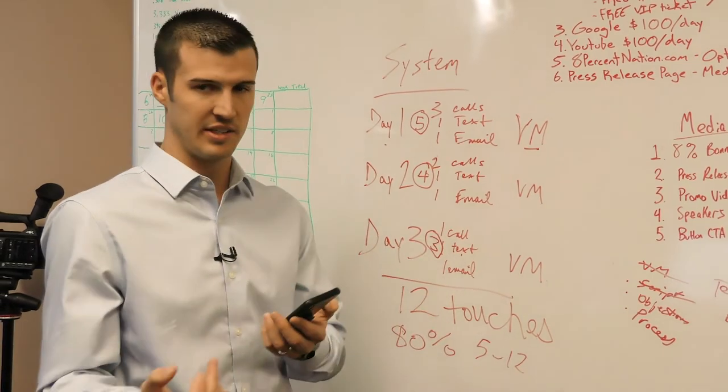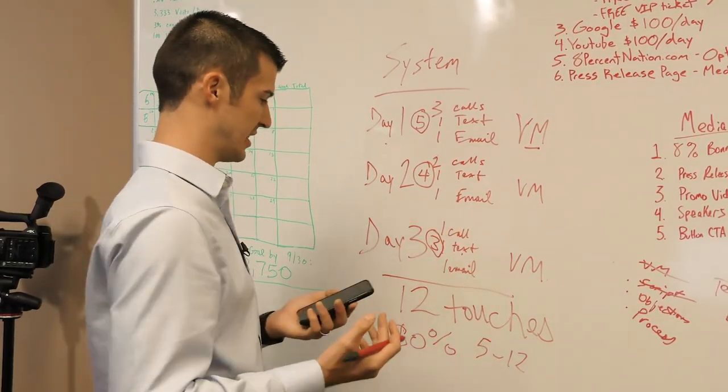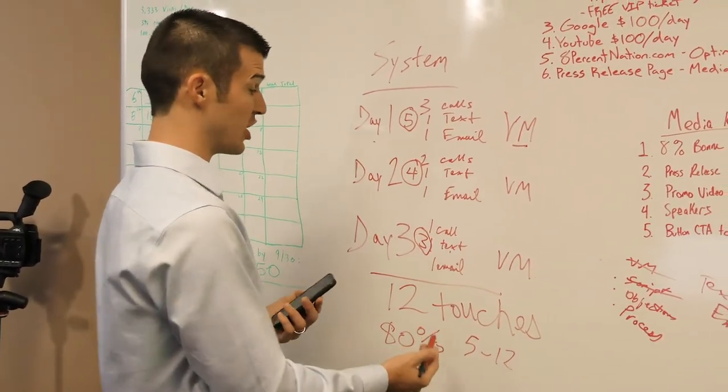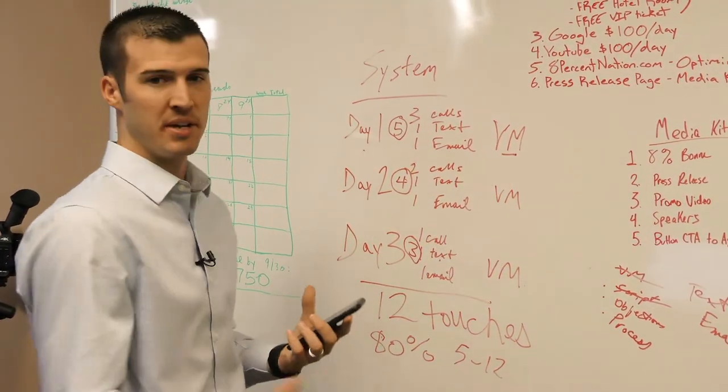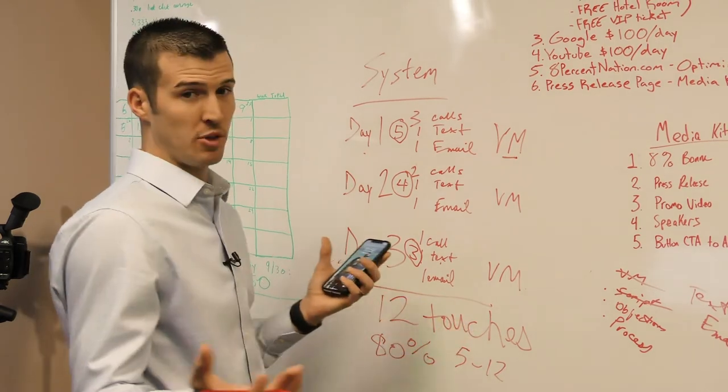So I want to put them all in the first 72 hours. And yes, an email and a touch is a contact, or an email text is a contact and a touch. 80% of sales are made between the fifth and 12th contact. So we're going to show you how to cram it all into the first 72 hours.